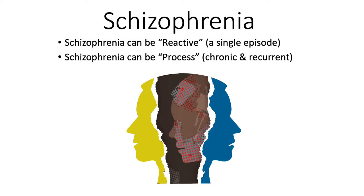This set of PowerPoint slides will be devoted to the topic of schizophrenia, sometimes referred to as psychosis. Schizophrenia can be reactive, meaning it occurs in a single episode, usually in response to a traumatic event, and then goes away and never comes back. However, most of the time when somebody is diagnosed as schizophrenic, what they're dealing with is process schizophrenia — it's chronic, recurrent, and something that will be with the person for a very long time.